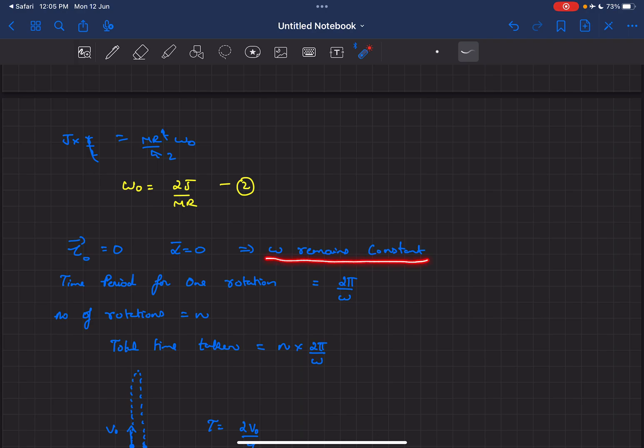And hence for a body rotating with constant ω, we know the time period for one rotation is simply 2π/ω. The total number of rotations is n, so the total time taken for the entire journey would be n times 2π/ω.